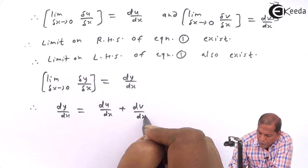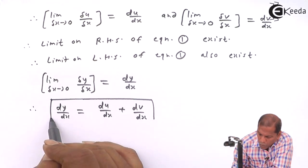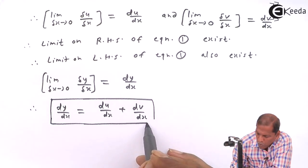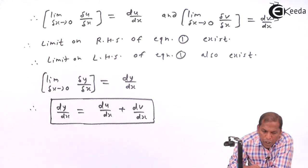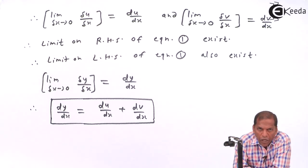Therefore, the limit on the left-hand side of equation 1 equals dy/dx. So this is the required proof for the given theorem. Thank you.